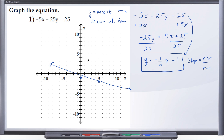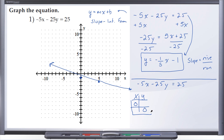Now let's solve for the x and y-intercepts to confirm we get the same line. We were given negative 5x minus 25y equals 25. When solving for intercepts, we create a t-table. To find the y-intercept, plug 0 in for x: negative 5 times 0 is 0, so that goes away, leaving negative 25y equals 25. Dividing both sides by negative 25 gives y equals negative 1.